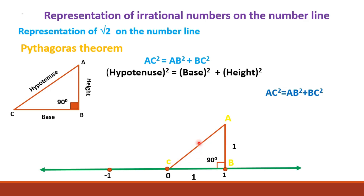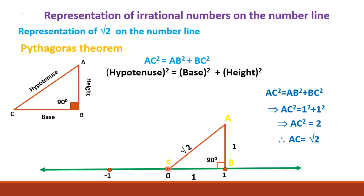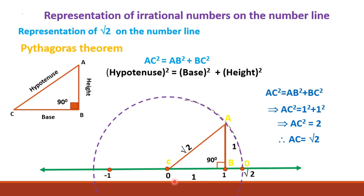Applying the Pythagoras theorem: AC² = AB² + BC² = 1² + 1² = 2, therefore AC = square root of 2. Now with AC as radius and C as center, cut an arc on the number line and name that point D. Since AC is the radius, CD will also equal square root of 2.